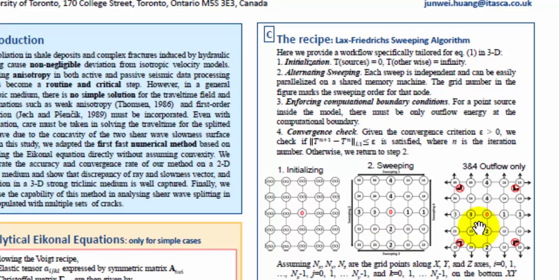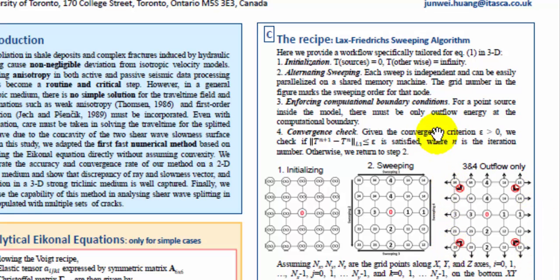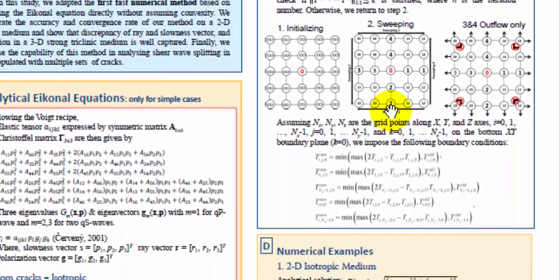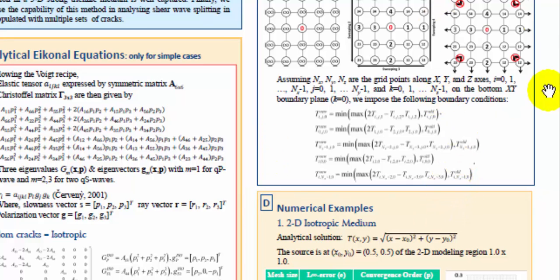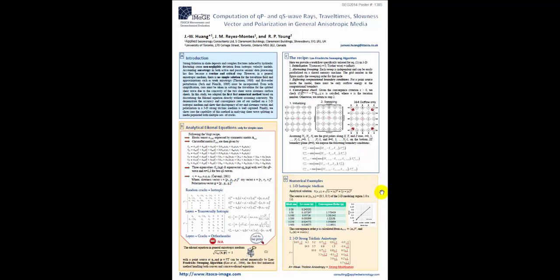Different from the classic fast sweeping method, this requires a third step, which is to enforce the boundary condition. Because if the source is inside the model, at the edge there should be no inflow information — the information should not come from outside, it can only flow outwards. The third step enforces outflow-only boundary conditions. After that, you check if the current value and the previous iteration are the same; if it's converged, you output the travel time. If not, you repeat the iteration until convergence. This mathematical expression states the same outflow boundary condition.